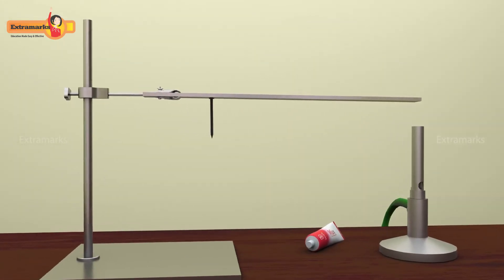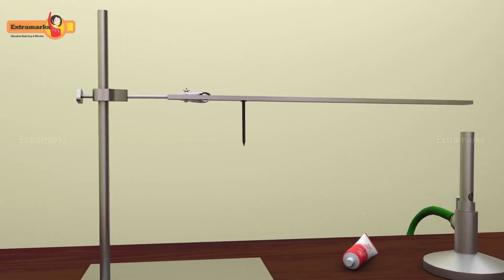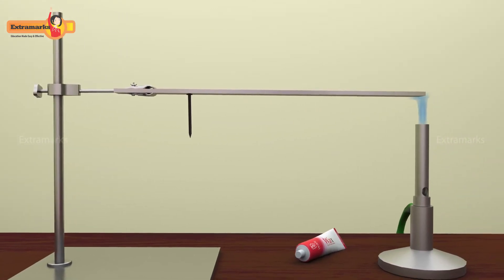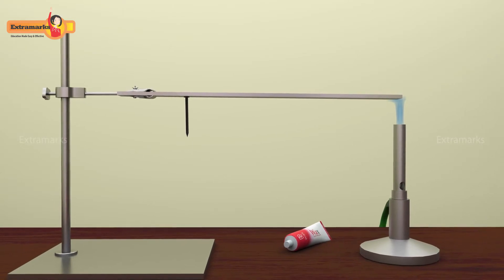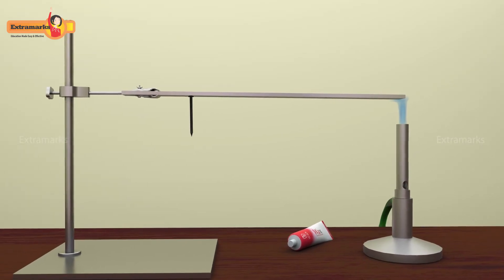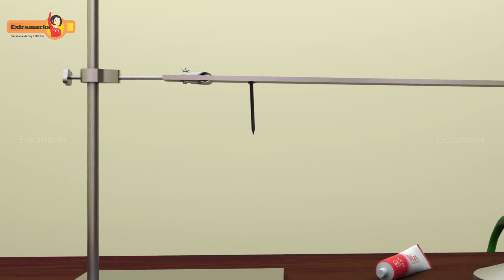Keep the rod in horizontal position with the help of a clamp stand. Heat the iron rod with a burner, keeping it at the side far from the iron nail. After some time, the wax starts melting and the iron nail falls down.